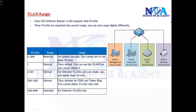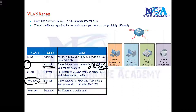The next thing we'll try to understand is the VLAN ranges. VLAN 1 is the default VLAN, which is present by default. When you run 'show VLAN', you also see VLANs 1002 to 1005, which are reserved for token ring and FDDI networks — we generally don't use them. These VLANs are present by default and you cannot delete or modify them.